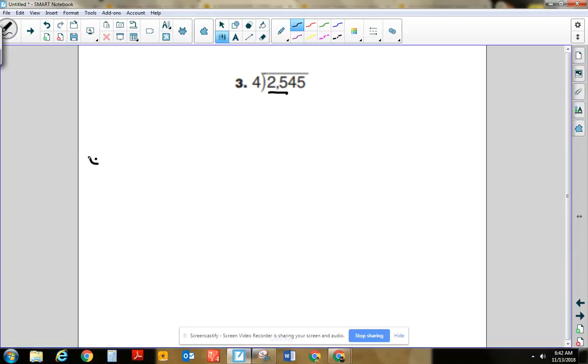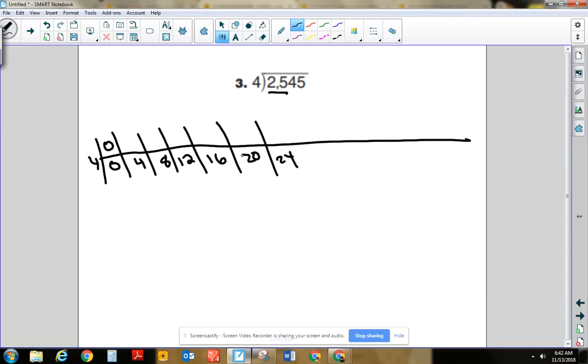So our problem reads this: 2545 divided by 4. So same thing, we are going to focus on the first two digits, that 25. And we are going to write out our multiples of 4. So we will do 0, 4, 8, 12, 16, 20, 24, 28. And I know I was going a little quick there with my fours. But I think that if you take your time, you will be just as accurate.